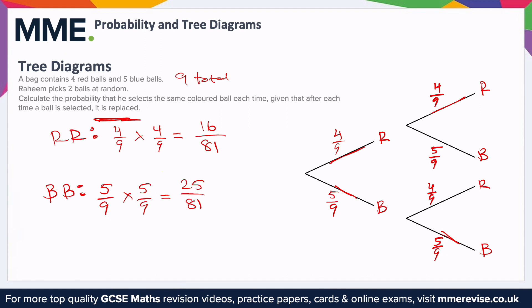These two events are mutually exclusive — you can't draw a red then a red and a blue then a blue, because you're only doing two draws. So to find the total probability of getting the same ball twice, we just add these two together: 16 over 81 plus 25 over 81. The bottom stays the same; 16 plus 25 is 41. So the probability that he selects the same coloured ball each time is 41 over 81 — just over half.